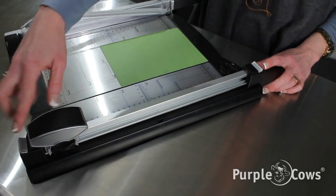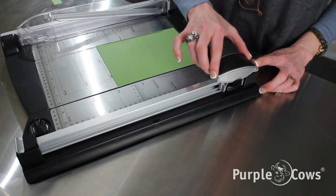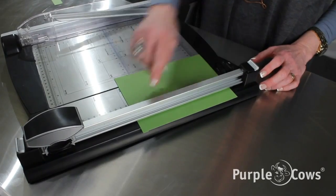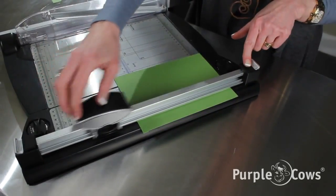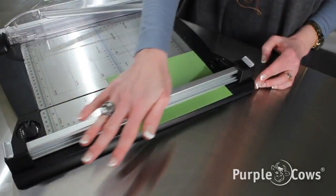The rotary trimmer rides along this sliding rail. Place your paper under the press bar, push down on these two locking mechanisms and slide.